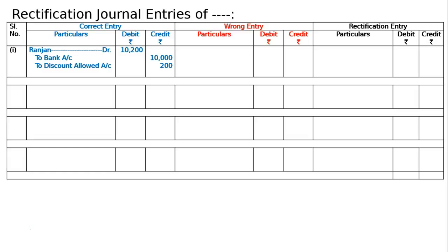When it is dishonored, the reverse entry is passed. But the discount was credited to discount received account — it was actually discount allowed. The mistake: Rajan debited 10,200, to bank 10,000, to discount received 200. The discount allowed became discount received account — only this discount received was the mistake.